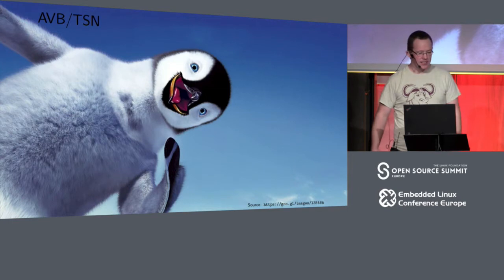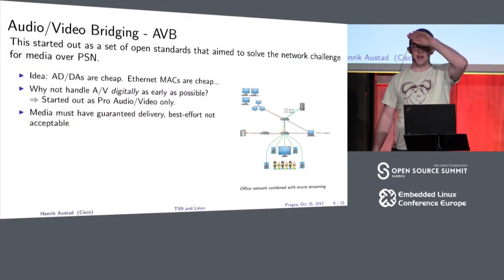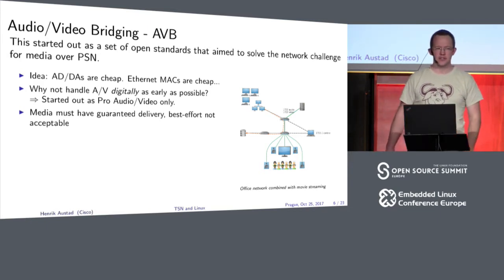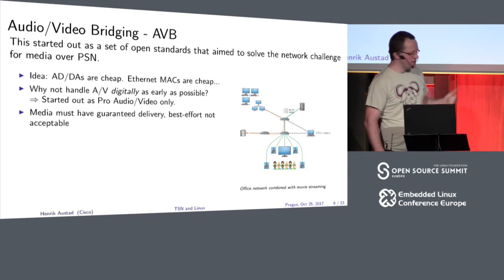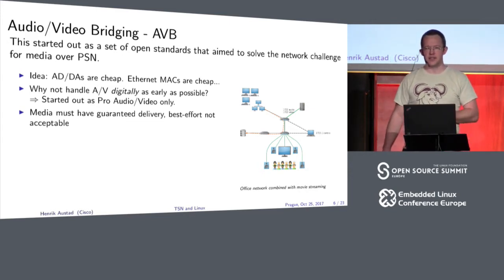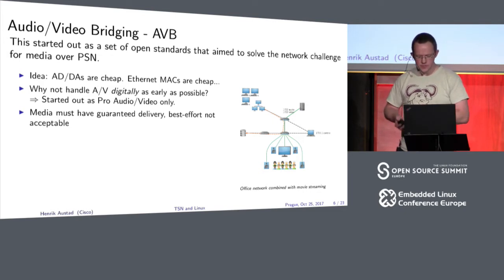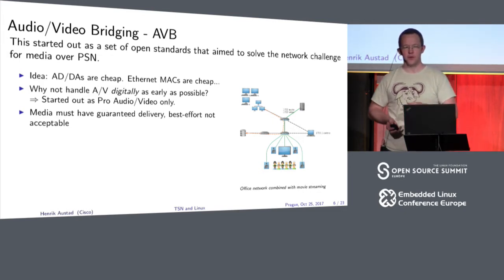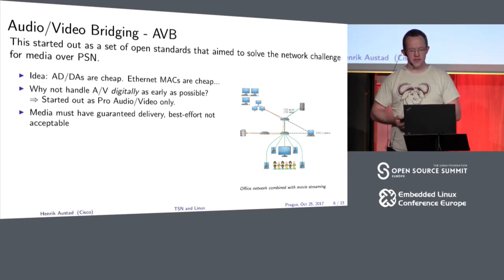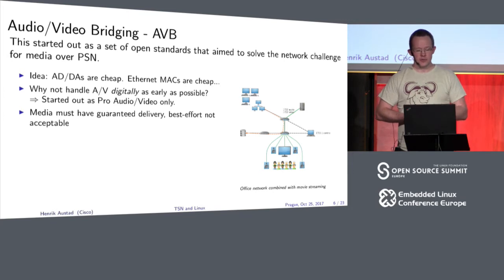So, AVB and TSN. The initial idea was that ADCs and DACs are getting cheap, and Macs are getting cheap — why not move the digitalization as close to the sources as possible? You solve a lot of problems doing that: you don't have to worry about SNR and ground loops in big systems, especially for large AV setups. But if you want to use a network, you need to have a reliable network; best effort won't help you.